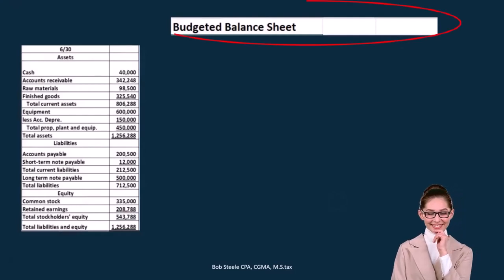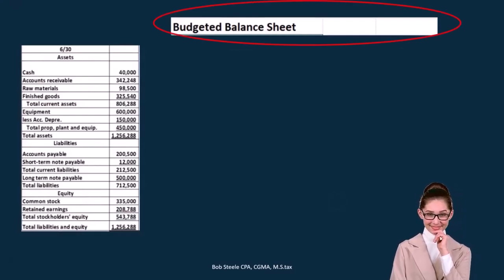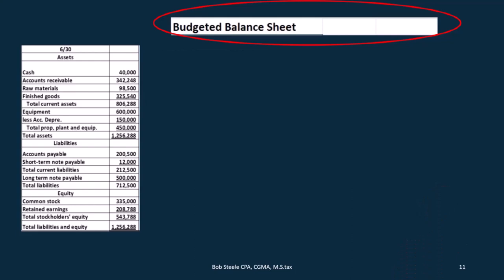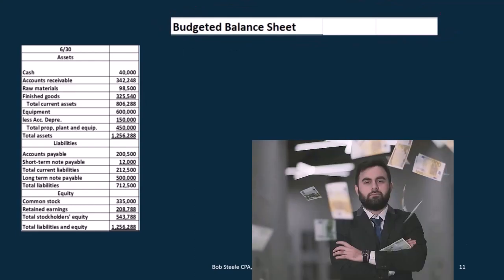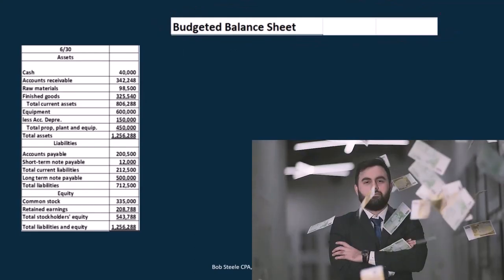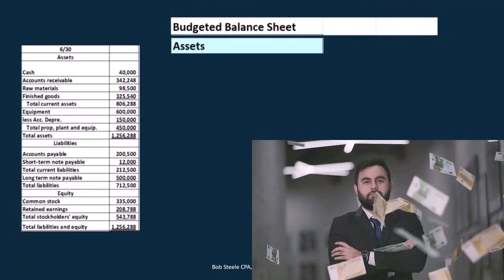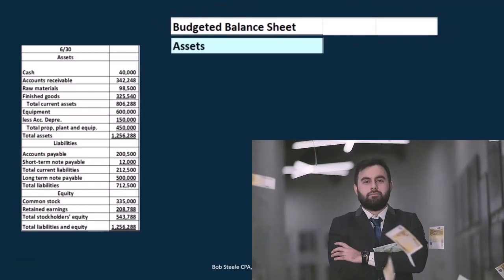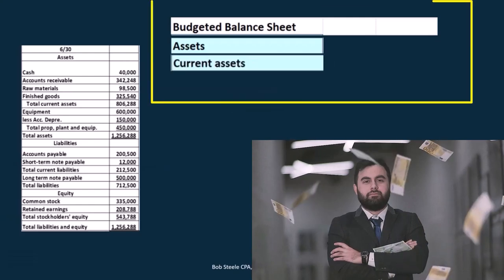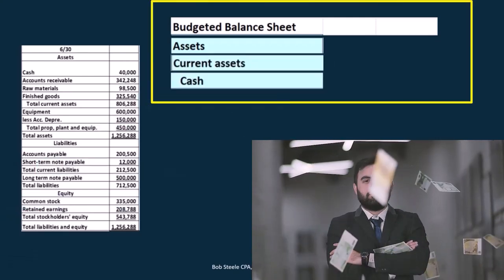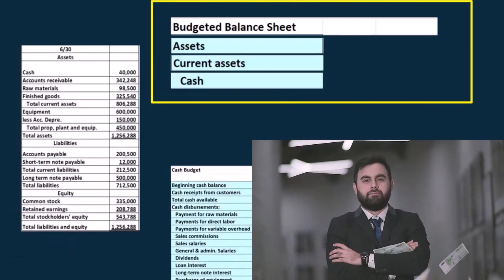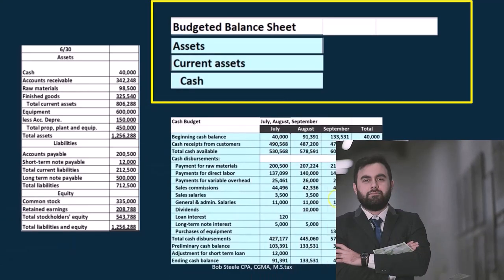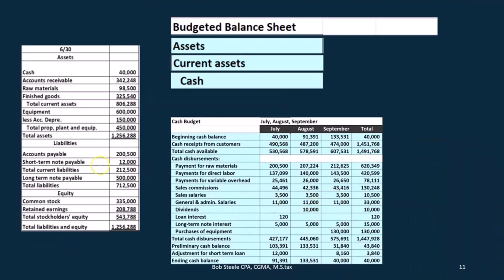The budgeted balance sheet shows where we stand at the end of our budgeted time period — after this quarter we are budgeting for has ended. We're going to look at the assets, starting with current assets. We'll begin with cash, which will be coming from the cash budget.